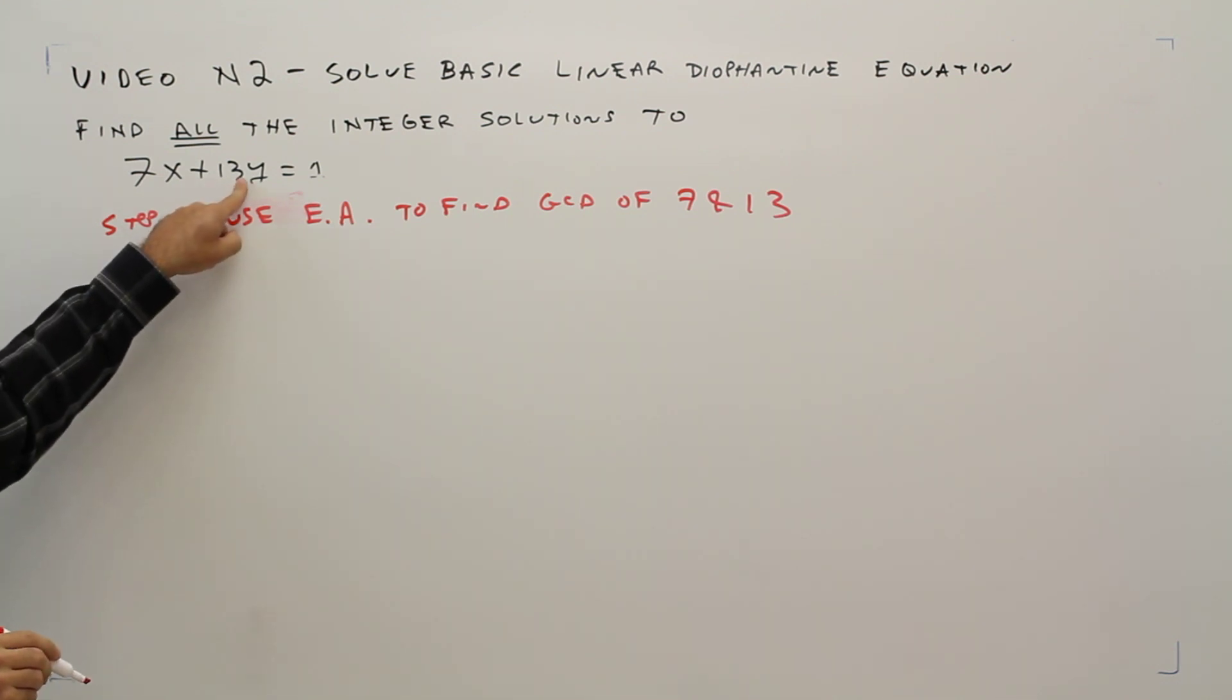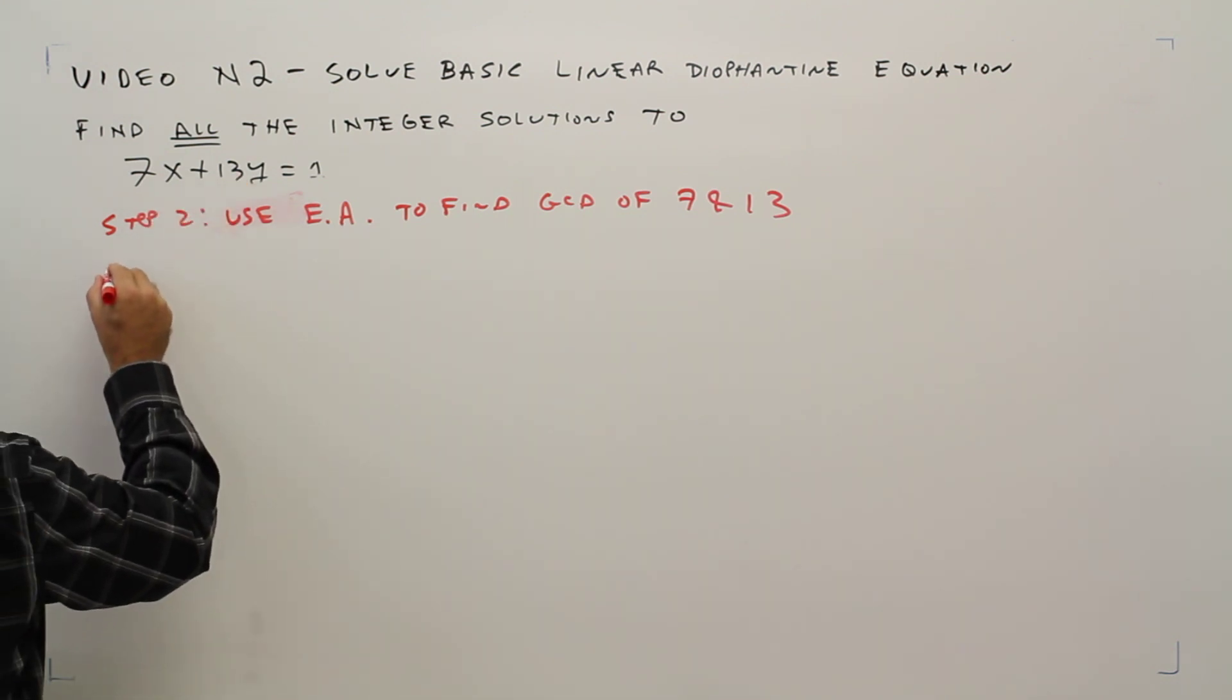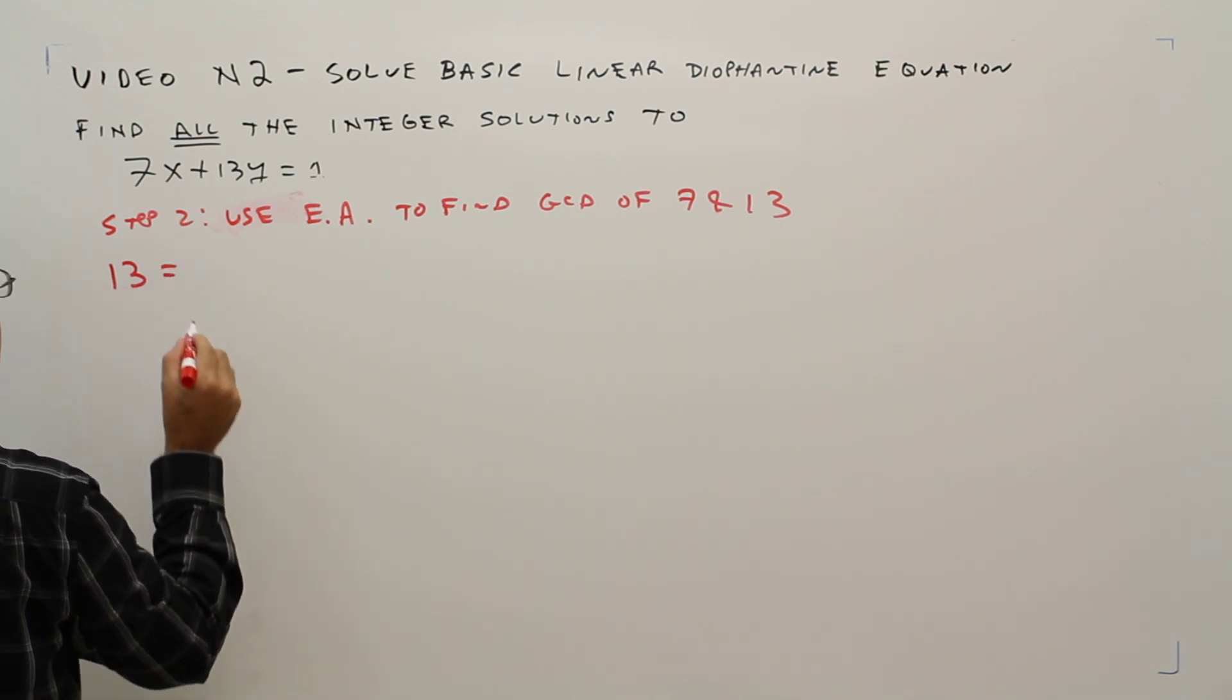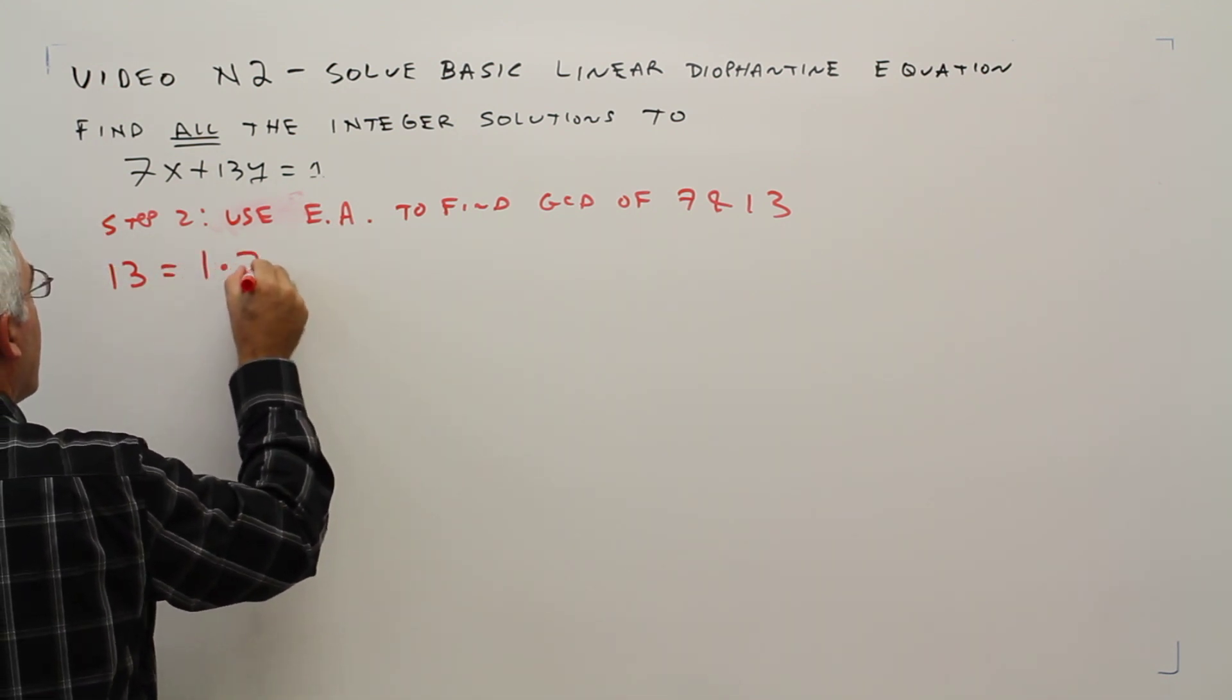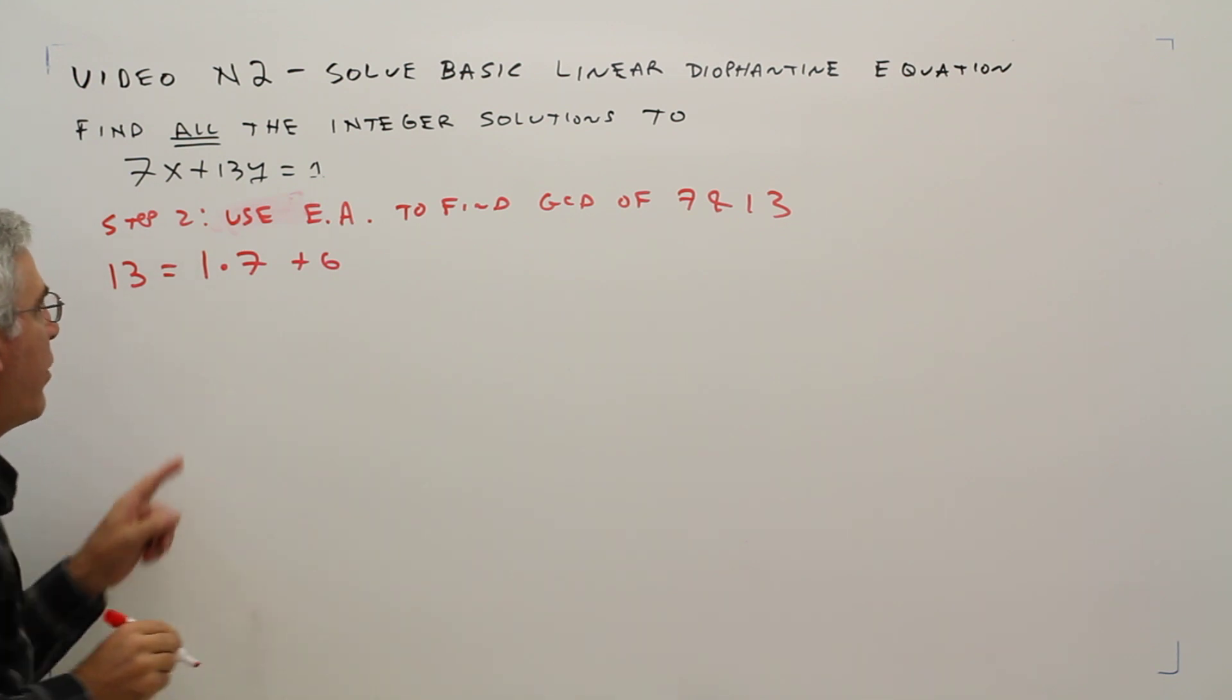Okay, so I start with the larger number. So 13 is going to be 1 times 7 plus 6.